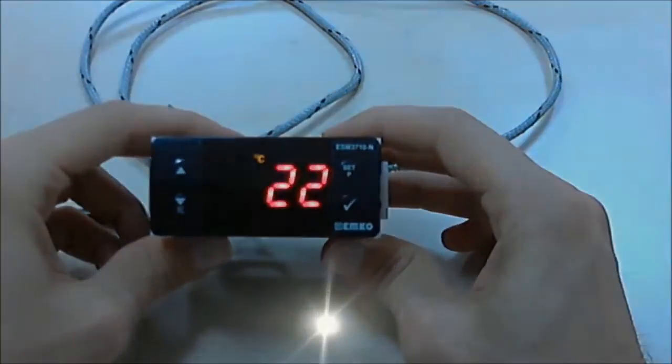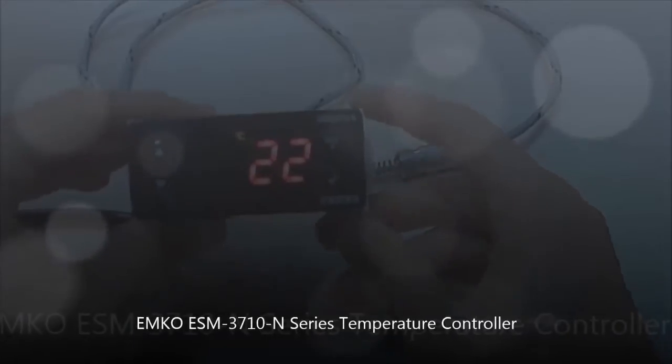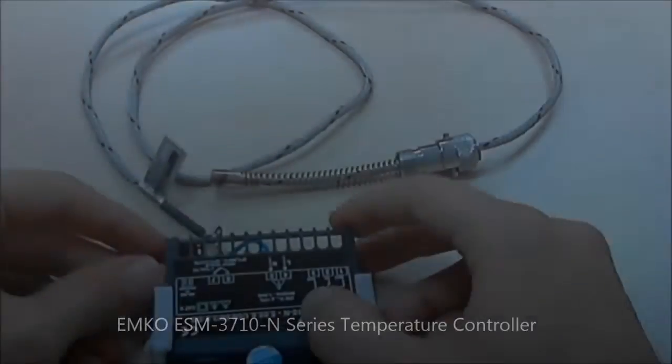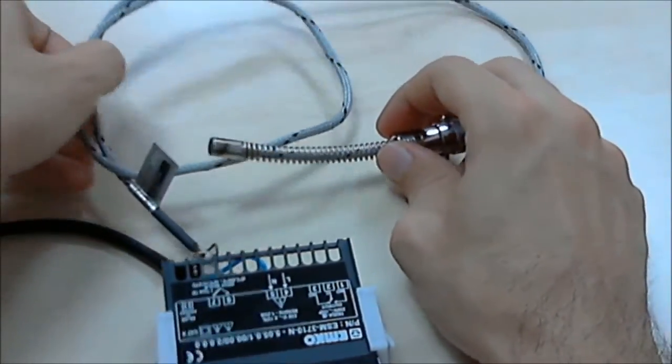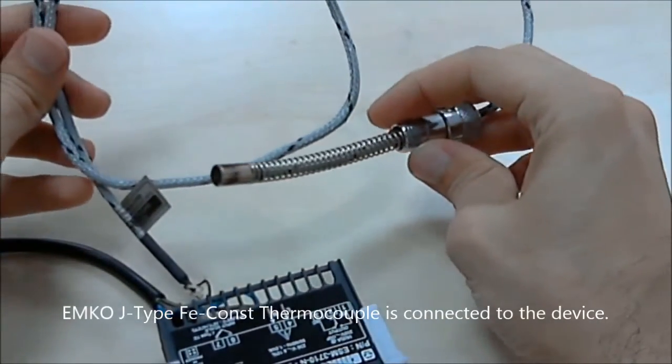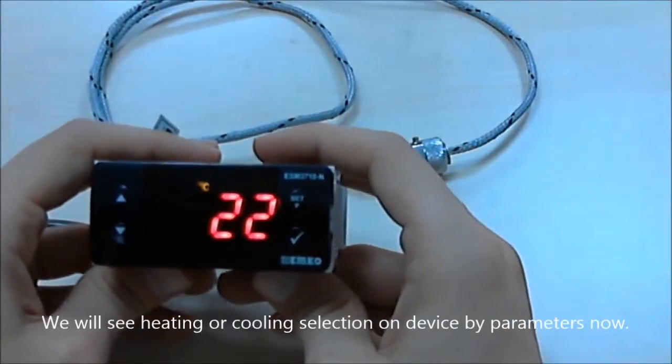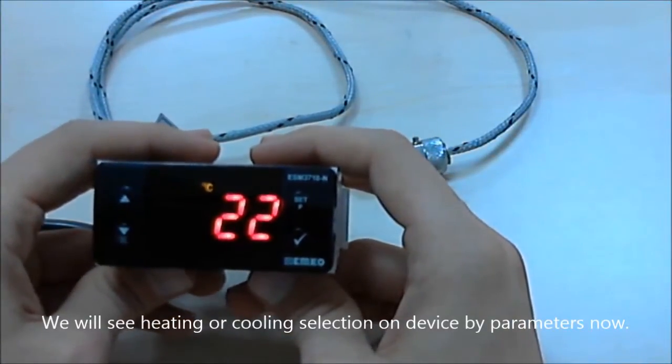This is Emco ECM3710 N-series temperature controller, and we connected a G-type thermocouple. Now we will see how we can select heating or cooling.